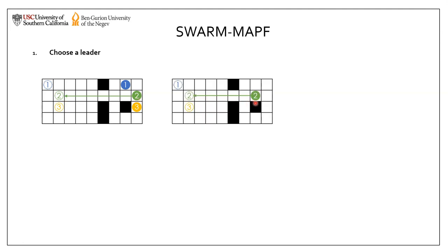For example, if agent 2 is here, then if agent 1 and 3 want to stay in their desired formation, then agent 3 will collide with an obstacle. So we call this a formation blocking location for agent 2.